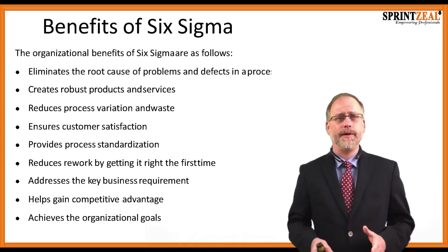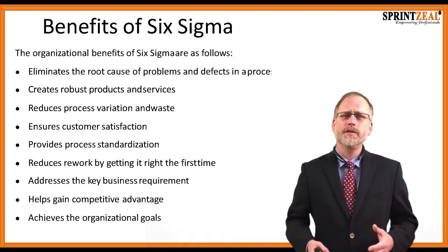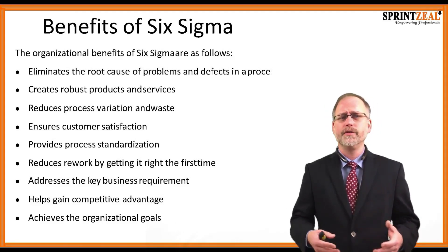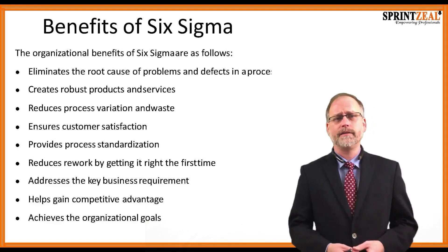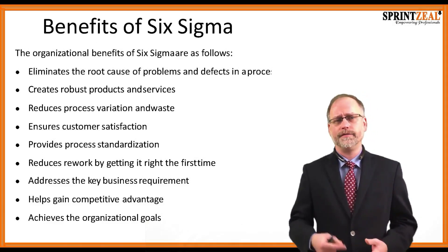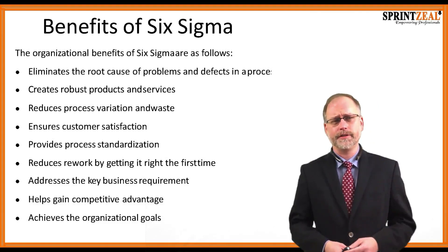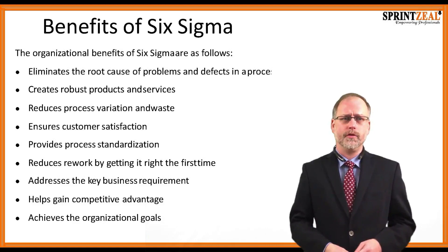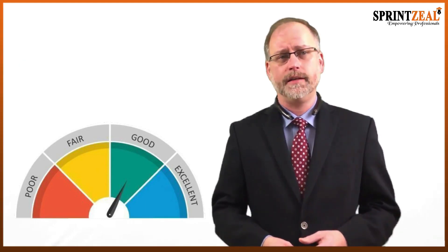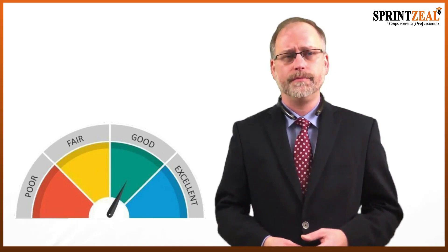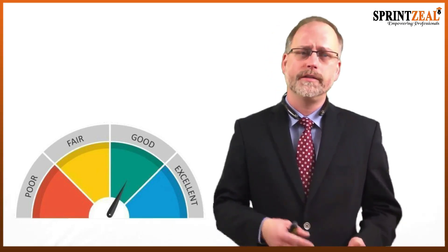Organizations benefit from Six Sigma by eliminating root causes of problems and defects, creating robust products and services, reducing process variation and waste, ensuring customer satisfaction, providing process standardization, and reducing rework by getting it right the first time. It helps address key business requirements, gain competitive advantages, and achieve organizational goals. Quality is defined as the degree of excellence of a product or service and conformance to customer requirements.